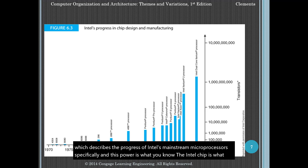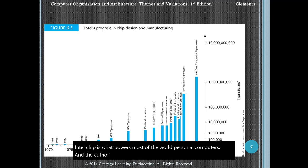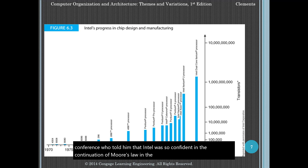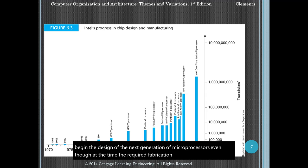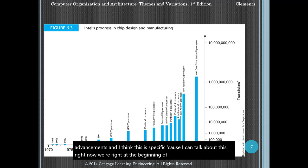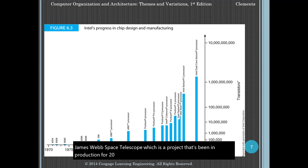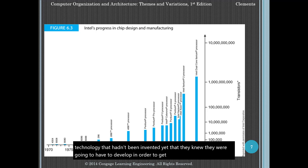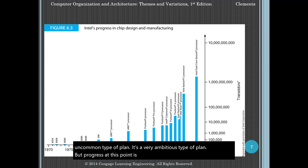The author talks about meeting an engineer from Intel at a conference who told him that Intel was so confident in the continuation of Moore's Law in the medium future that they could begin the design of the next generation of microprocessors — even though at the time, the required fabrication technology did not exist. This is specific and relevant right now: just a few weeks ago, we launched the James Webb Space Telescope, a project that's been in production for 20 years. They actually set out with ideas requiring technology that hadn't been invented yet, knowing they would have to develop it. Progress is so reliable that engineers could assume that by the time the next generation of processors had been designed, suitable technologies would be in place.